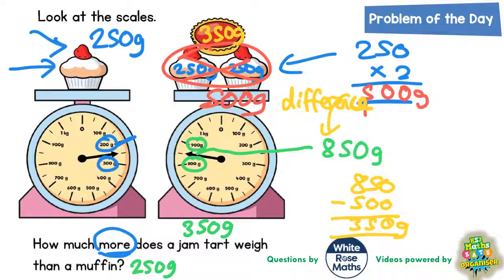And virtually everyone out there can probably do that in their head. Well, 350 is exactly 100 grams more than a muffin, so our final answer is 100 grams. Final answer.